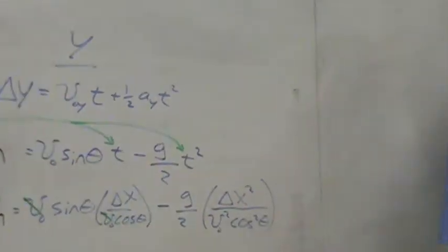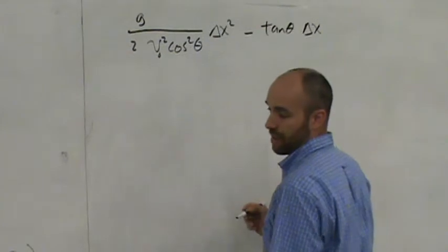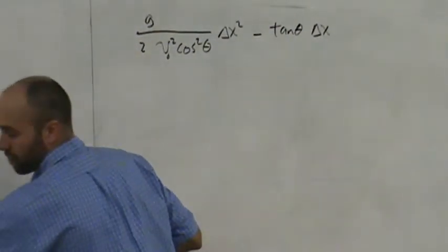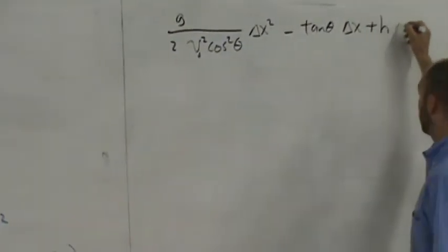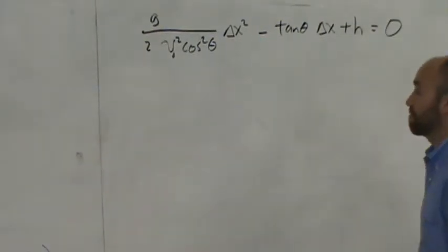So it's going to be minus tangent of theta, times delta x. And my h, that's still over here on the left side, so that's going to be plus h. And I've taken everything off the right side, so it's zero on the right side.